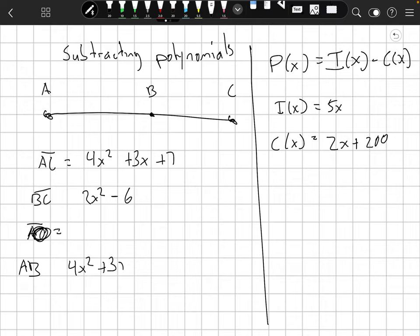So we're going to go 4x squared plus 3x plus 7 minus the BC part. So the whole thing. Kind of scribble that out. Minus the BC. So minus 2x squared minus 6. And let's see what we get here.